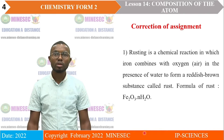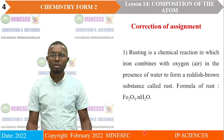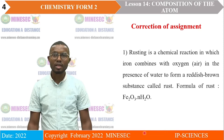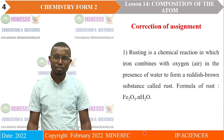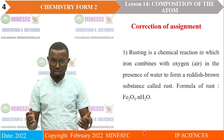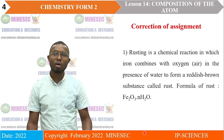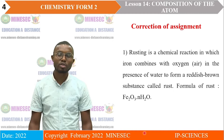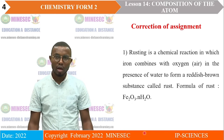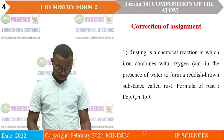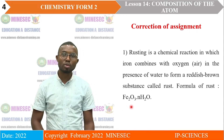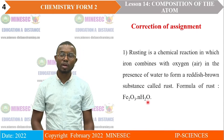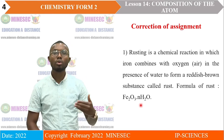The first question: define rusting. Rusting is a chemical reaction in which iron combines with oxygen, which is in air, in the presence of water or moisture, to form a reddish brown substance called rust. The formula of rust is Fe2O3·nH2O, where n is a whole number.